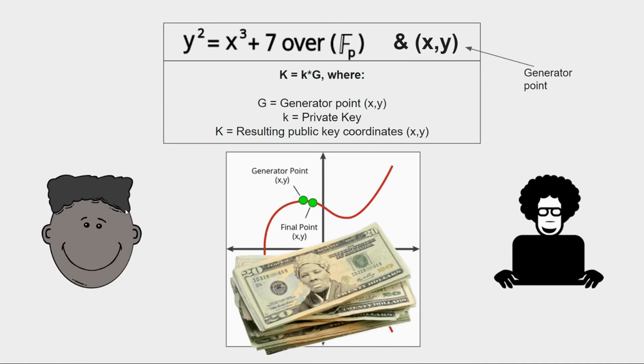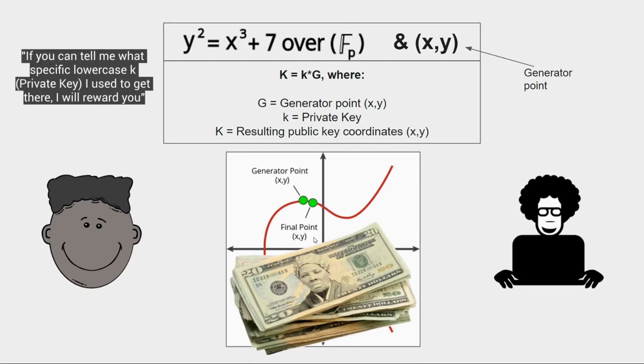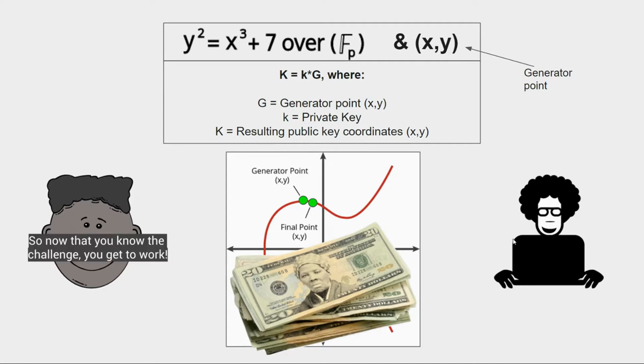So again, this is me. I announce to the world, hey world, I'm using this formula with this generator point to arrive at this final point. If you can tell me what this lowercase private key is that I used to get there, then I will give you a thousand Harriet Tubman dollars. So now that you know the challenge, you get to work.